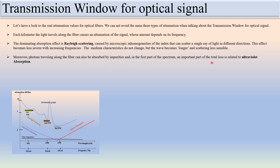In the first part of the spectrum, an important part of the total loss is related to ultraviolet absorption. Above 1700 nanometers, light starts to be directly absorbed by the molecules of silica — this is infrared absorption. So after 1700 nanometers, infrared absorption comes into existence and starts increasing. Whenever the wavelength is lower, you can see ultraviolet absorption and Rayleigh scattering come into existence.